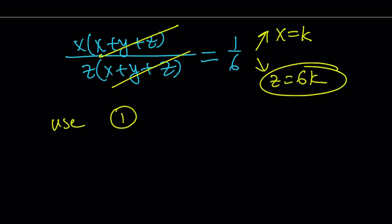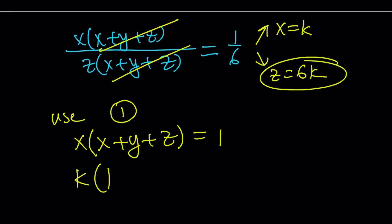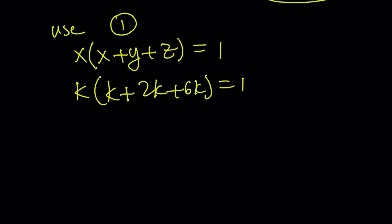Number 1 is x times x plus y plus z equals 1. Now, let's replace x with k and y with 2k and z with 6k. And this gives us the following: k plus 2k plus 6k is equal to 9k and then k times 9k is equal to 9k squared and that equals 1. From here, we get k squared equals 1 ninth and that gives us two solutions: k equals 1 third and k equals negative 1 third.